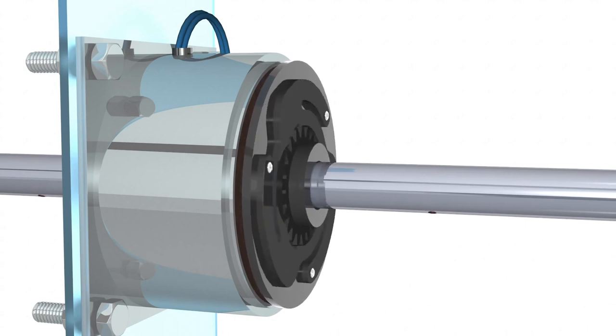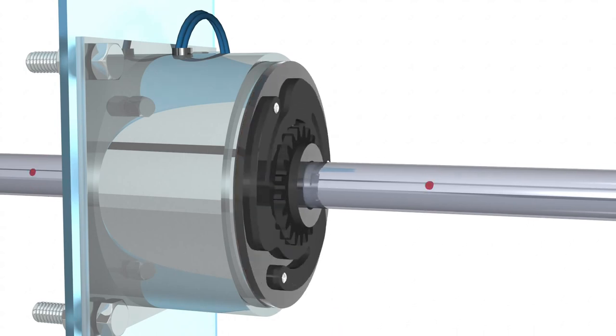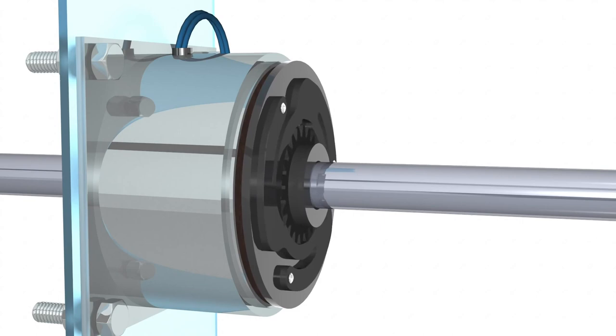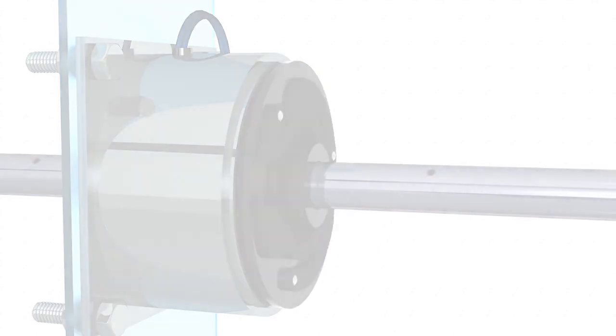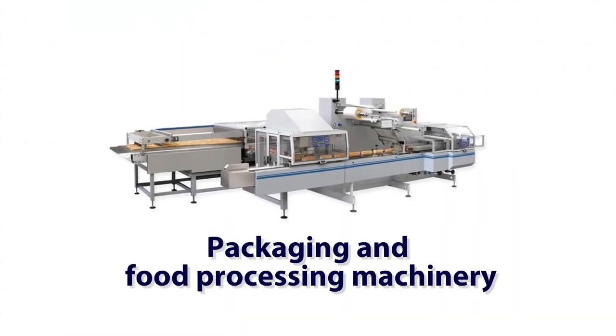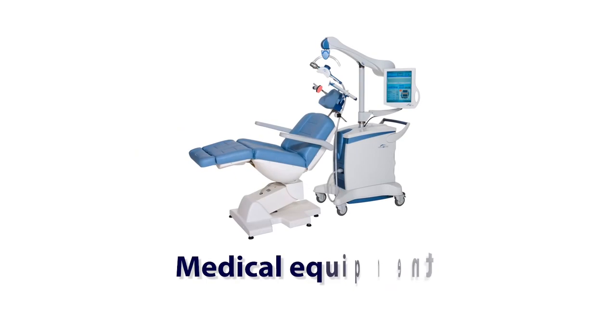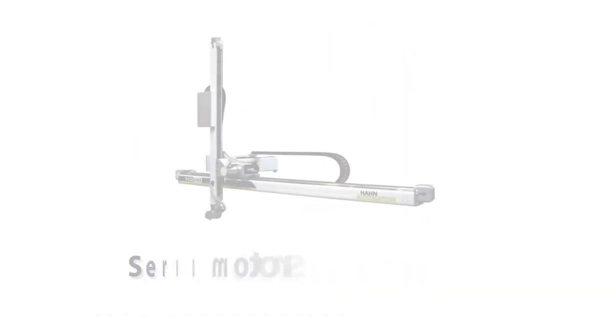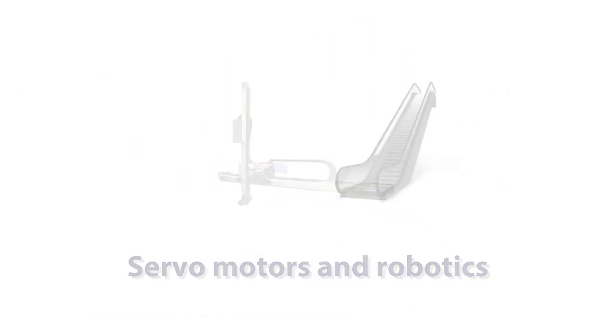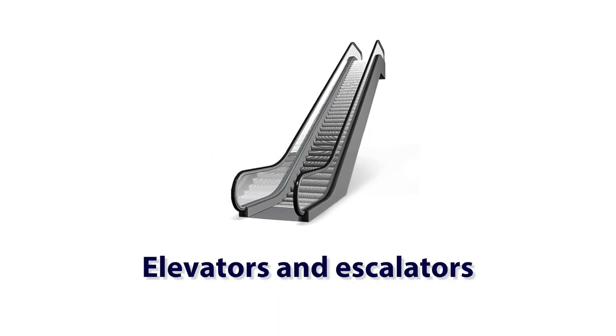Electromagnetic brakes can be found in almost any application that requires the holding or stopping of rotary motion. Typical applications are packaging and food processing machinery, medical equipment, servo motors and robotics, and elevators and escalators.